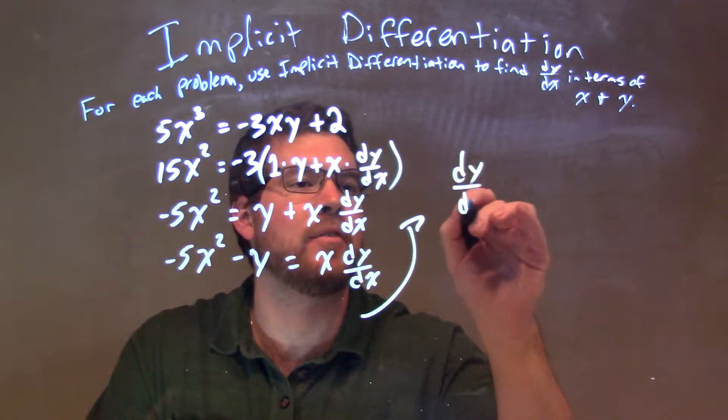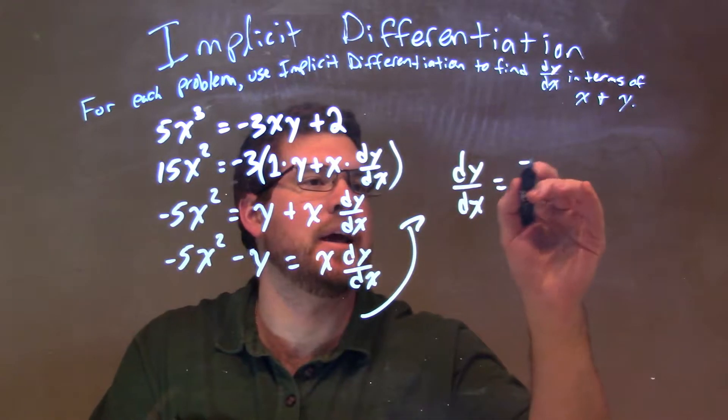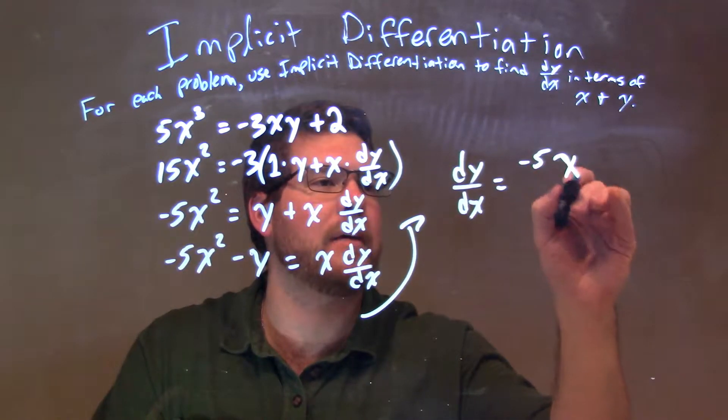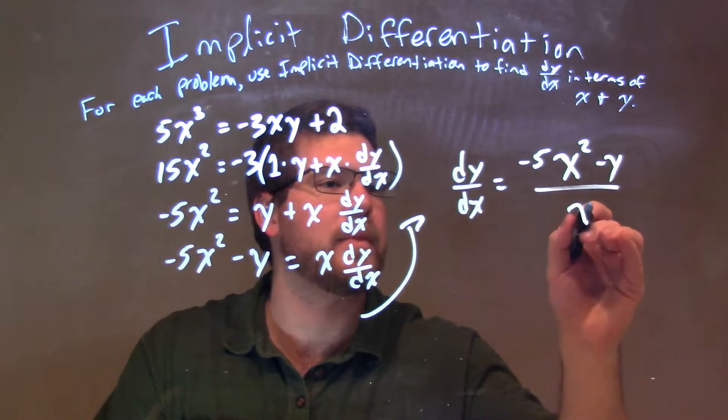So, I have dy/dx by itself is equal to the numerator, which is that negative 5x squared minus y over x.